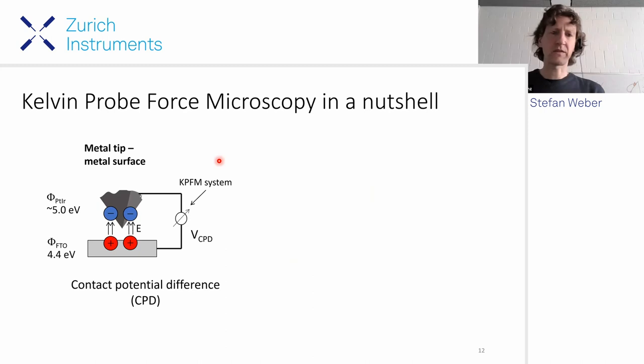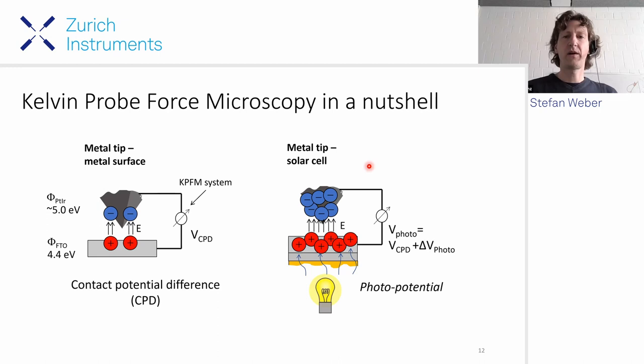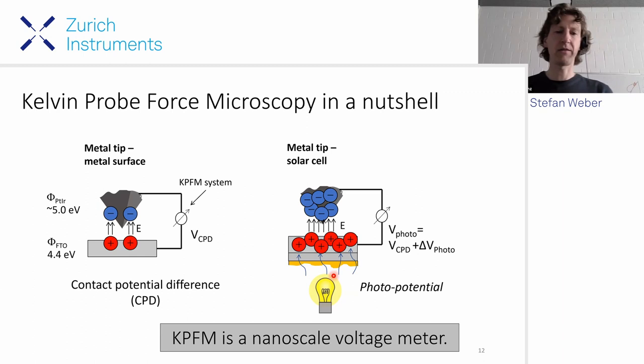In a nutshell, Kelvin probe force microscopy: if you have a metal tip and metal surface with different work functions, your KPFM system quantifies the difference in work functions, the contact potential difference. If you use active materials, apply external voltage, or use solar cell material with light, what you detect is the contact potential plus any photo voltage or external voltage. Kelvin probe force microscopy is like a nanoscale voltage meter.